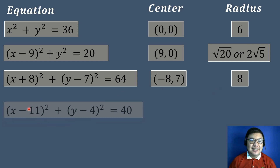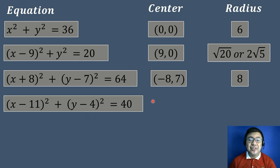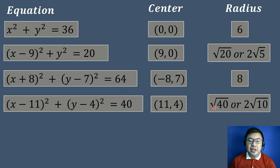Last example in this set: the quantity of x minus 11 to the second power plus the quantity of y minus 4 to the second power equals 40. To get the center, h is negative 11, which becomes positive 11, and k is negative 4, which becomes positive 4. So the center is at coordinates (11, 4). Since 40 is not a perfect square, the radius is the square root of 40, which simplifies to 2 square root of 10.